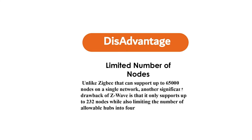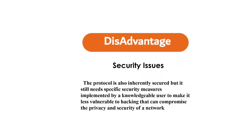Limited number of nodes. Unlike ZigBee that can support up to 65,000 nodes on a single network, another significant drawback of Z-Wave is that it only supports up to 232 nodes while also limiting the number of available hubs to 4. Security issues. The protocol is also inherently secured but it still needs specific security measures implemented by a knowledgeable user to make it less vulnerable to hacking that can compromise the privacy and security of your network.